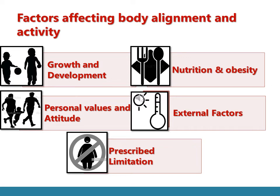Regarding nutrition and obesity: when a person is malnourished, there are inadequate nutrients, vitamins, or minerals in the body, affecting the growth of muscles and bones. Lack of protein results in a thin appearance since protein is responsible for muscular growth; lack of calcium or vitamin D causes bone problems. Obesity also affects body alignment — excess weight causes limitations in movement and problems with the joints, affecting overall posture and balance.